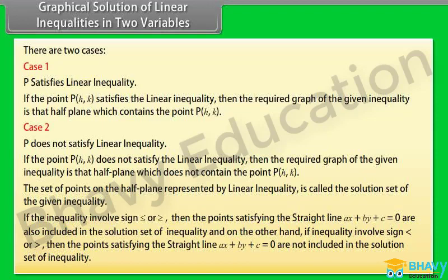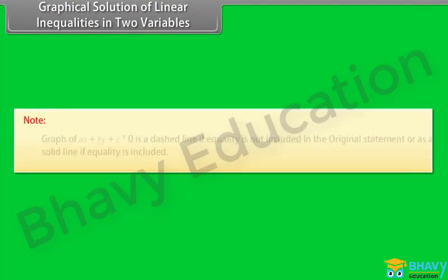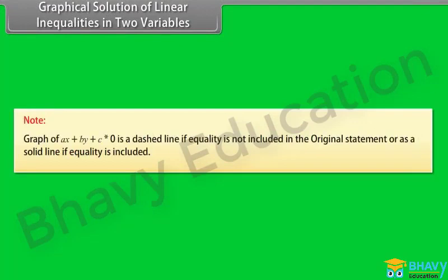Note: the graph of Ax plus By plus C equals 0 is a dashed line if equality is not included in the original statement, or a solid line if equality is included.